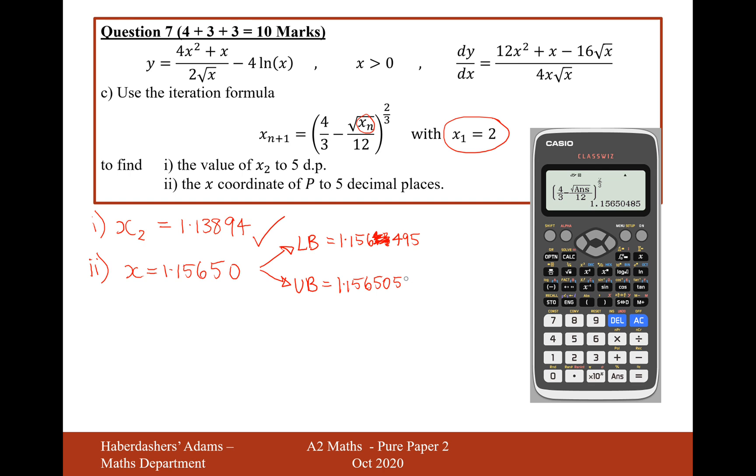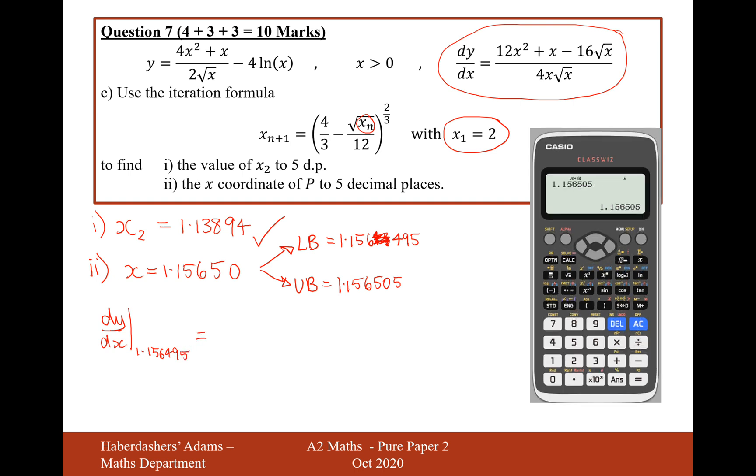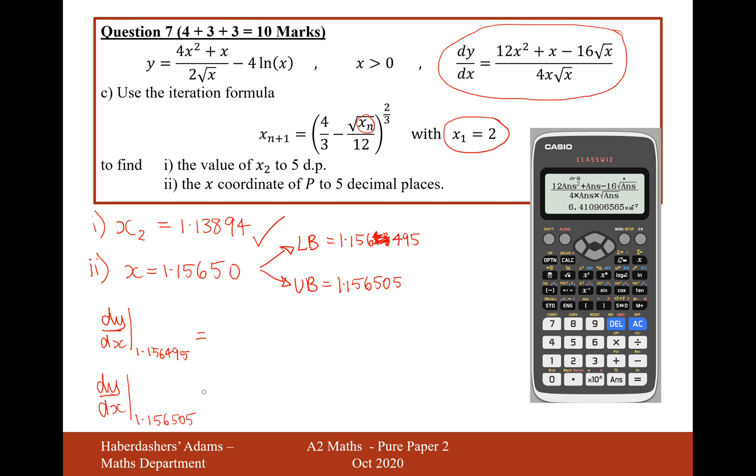So let's now substitute in the upper bounds and the lower bounds into this expression up here, because we're looking for the derivative to be equal to zero. So dy/dx evaluated at the upper bound first, at 1.156505. So that's going to be a very, very small number here, so it's going to be 0.00000064. So that's positive, basically.